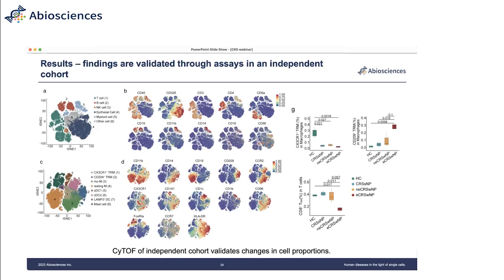The next question is: what method was employed to collect cells — brush biopsies or other methods? These samples were collected via endoscopy. We get a very small chunk of tissue, similar in size to a grain of rice, and that is enough for digesting the tissue into single cells and identifying the different immune cells.